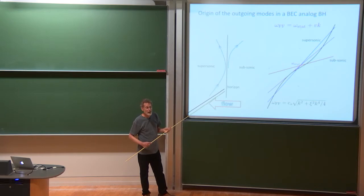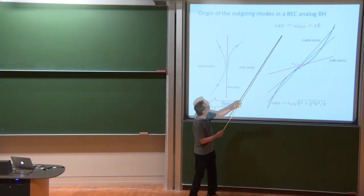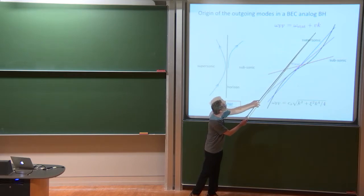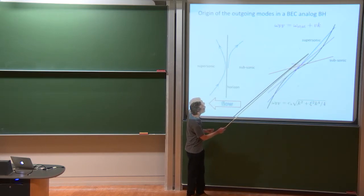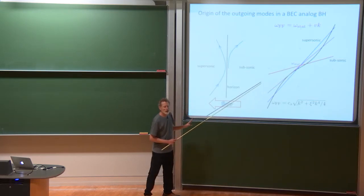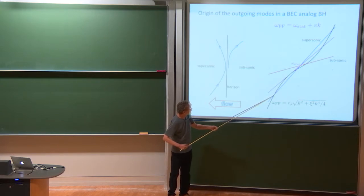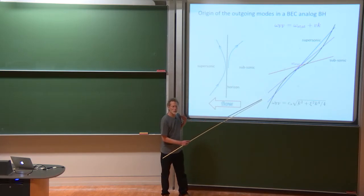So this defines a straight line with intercept given by that static conserved frequency and slope given by the velocity of the flow. So I've plotted on here three of those lines, one subsonic, one supersonic, and one exactly, it's still supersonic, but it's tangent to the curve right there. So now we can see what happens. Suppose we start out with this root of the dispersion relation. You can see that the slope of this curve, which is the group velocity, is greater than the slope of the straight line, which means that this corresponding wave mode is propagating to the right. Here it is. It's moving towards the horizon.